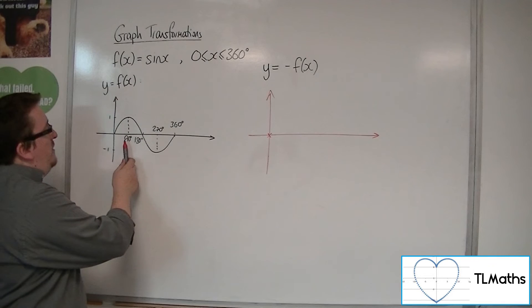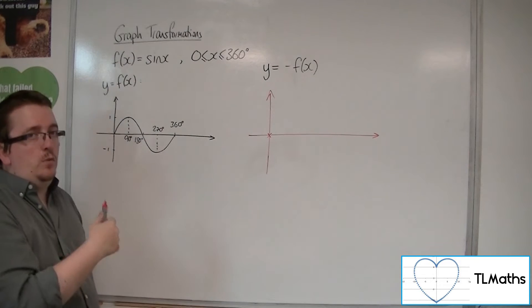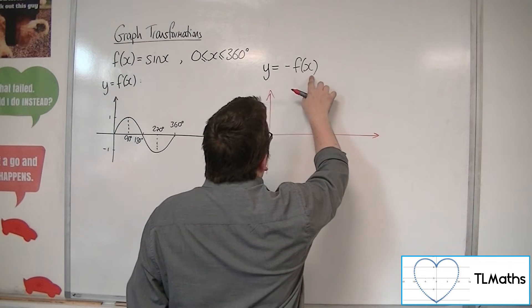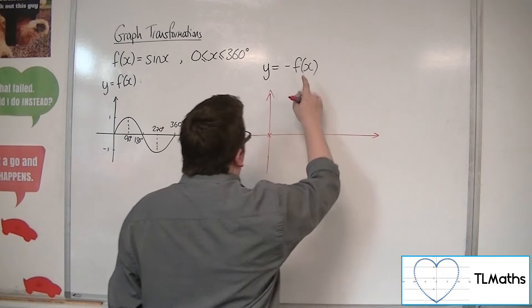When x is 90, we get f of 90, which is 1. So when x is 90, we get f of 90, which is 1, so minus 1.